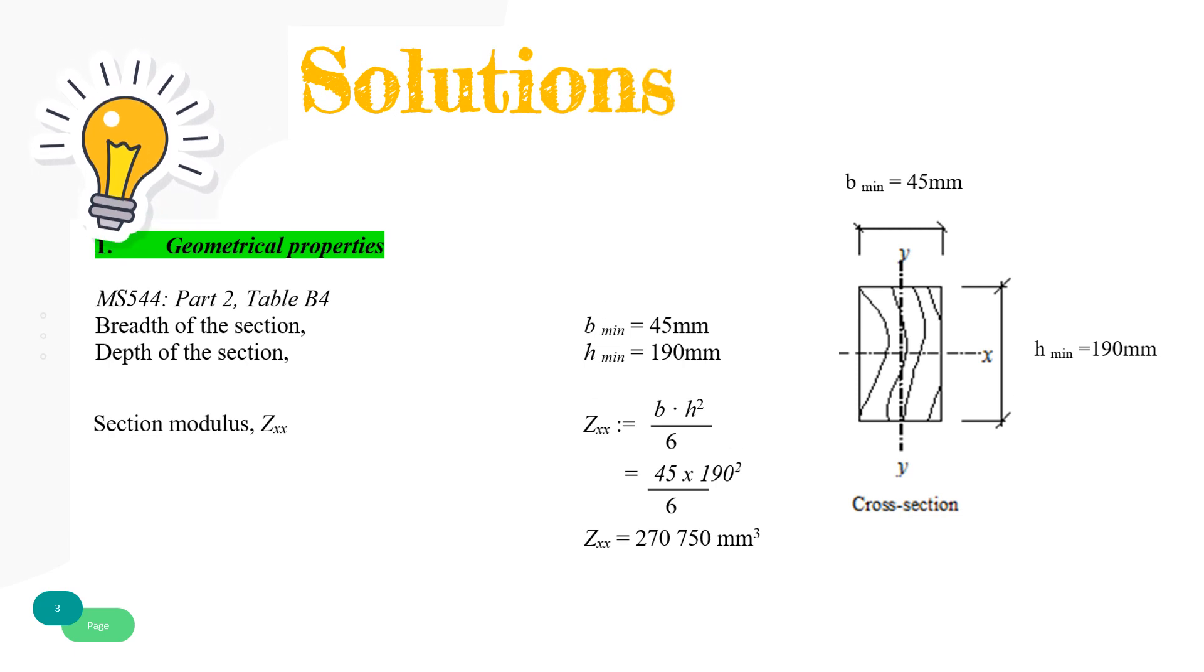The first step is to determine the geometrical properties of the cross section. Since the interior beam with smooth surface, the section is considered as dry which has 19% moisture content. Refer to Malaysian Standards Part 2, Table B4 for the values of breadth and depth of the section.